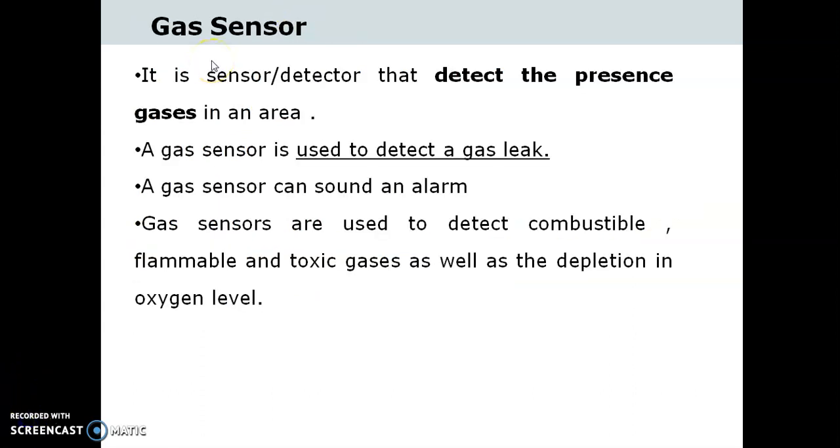So let us first understand what is a gas sensor. A gas sensor or detector is a device that detects the presence of gas in an area. It is often used as part of a safety system. A gas sensor is used to detect a gas leak. It can be interfaced with a control system so that the process can be shut down in the event of a gas leak.